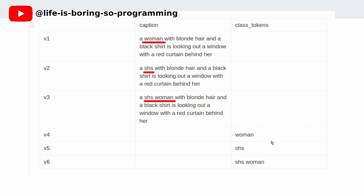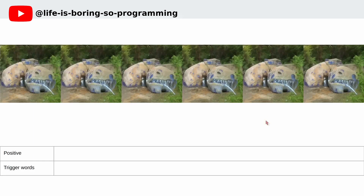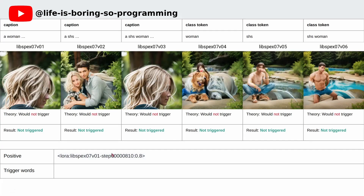So we will see if we can trigger the LoRA effect using these trigger words. These are the three trigger words that we would try. The first one is 'woman,' the second one is 'SHS,' and the last one is 'SHS woman.' We first try some very simple prompts. The first prompt is an empty prompt. This is the image with the empty prompt. Next, we add the LoRA file to the prompt. Each column represents the corresponding result of those six different LoRA models. Because there is no trigger word in the prompt, the LoRA effect should not come out, and we can see that the results are correct.